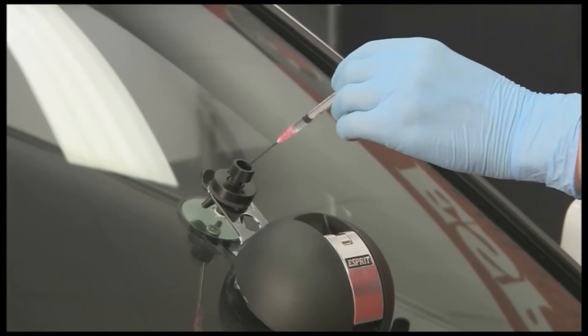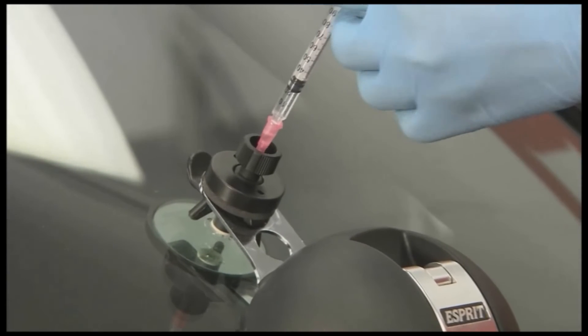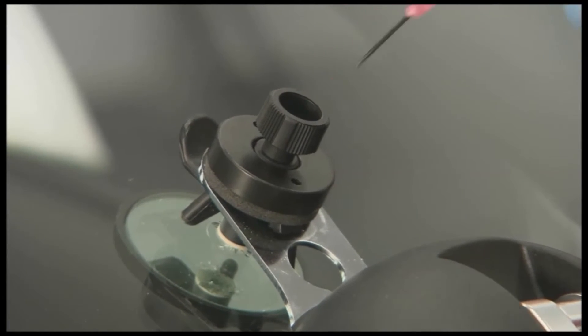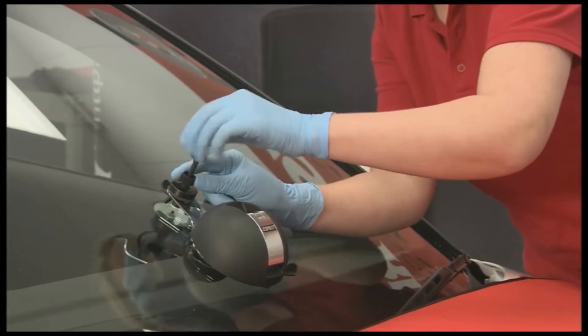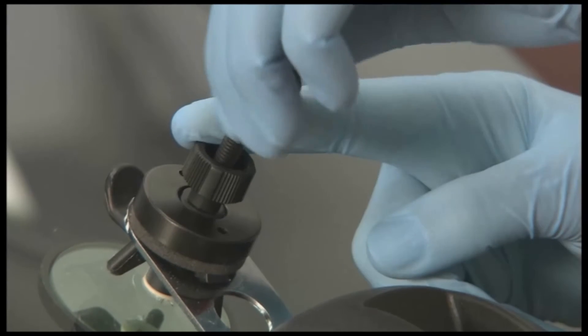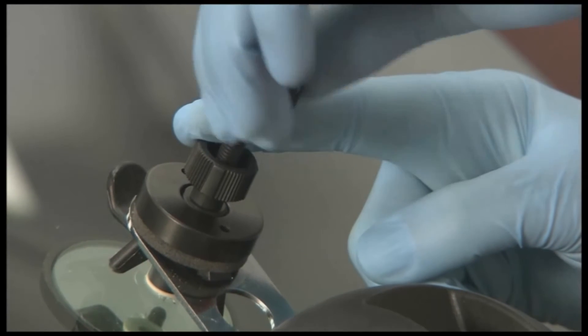The resin is then inserted into the injector. The plunger is screwed slowly into the injector, pushing the resin to the edges of the damage until a slight resistance is felt.